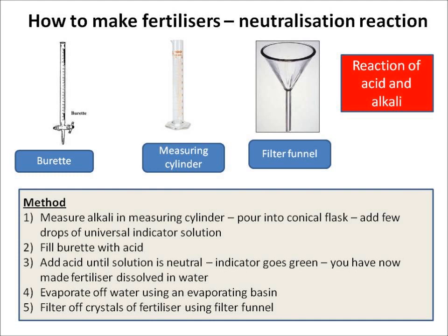The actual reaction we do to make a fertiliser is a neutralisation reaction — we react an acid with an alkali. For this we need a burette, a measuring cylinder, and a filter funnel. Step one: measure a volume of alkali into the measuring cylinder and pour that into a conical flask with a few drops of universal indicator solution. Step two: fill the burette with acid. Step three: add the acid to the conical flask until the solution goes green, telling us it's neutral.